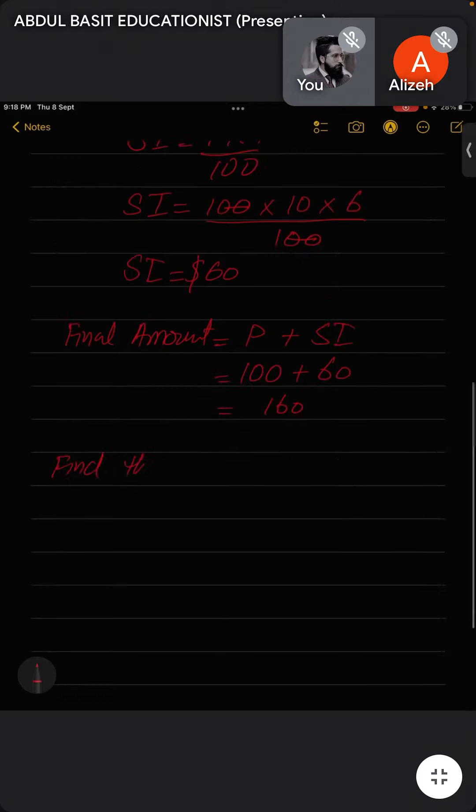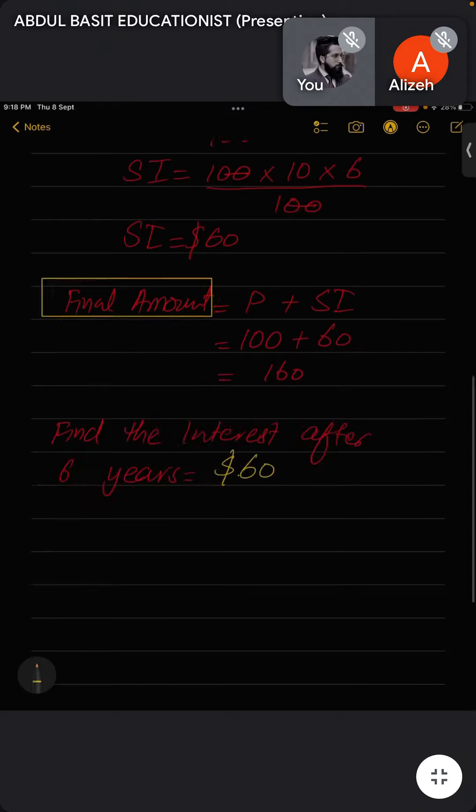So the next question can be: find the interest only, or find the amount of interest after six years. In that question, only $60 is the answer, not $160, because the examiner is not asking you about the final amount.